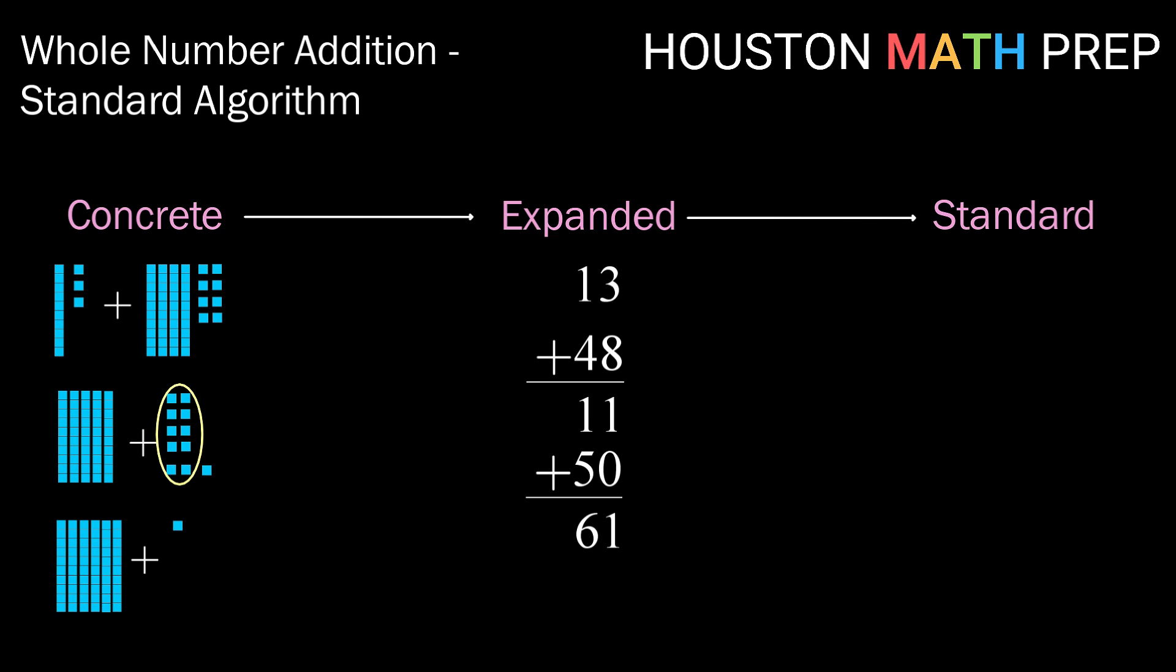Now that kind of brings us to shorthand that with our standard addition algorithm. So here we're doing the same thing but instead of writing that 11 and that 50 we're doing that trading by saying 3 plus 8 is 11. So we're going to bring down the ones place and we're going to take the 10 from the 11 and we're going to bring it up top.